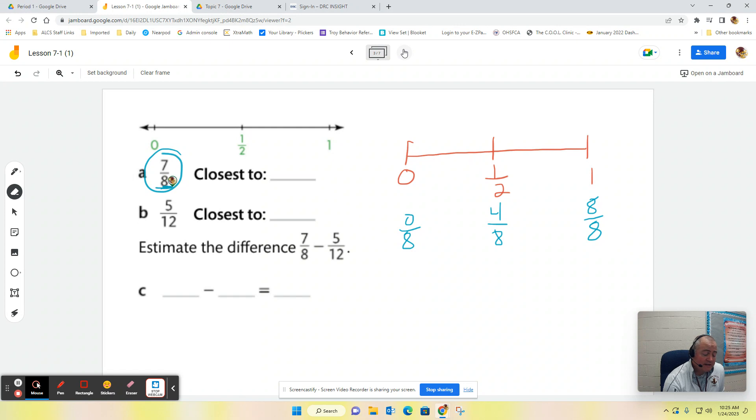Now I think it's even easier. I just need to figure out where 7/8 would be on my number line. Well, 7/8 is going to be almost 8/8. It's going to be right around there. So obviously, 7/8 is closer to one whole.